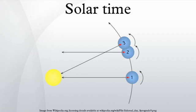Mean solar time: mean solar time is the hour angle of the mean sun plus 12 hours. Currently this is realized with the UT1 time scale.